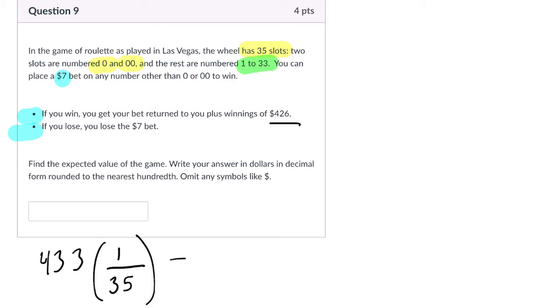When you lose, which is every other time, or essentially, let me say it this way: everyone loses $7. Everyone, even if you win, the way I've counted this, and this is one way to solve it, I'm saying you get $433 back, but initially, at least, you lost that $7.